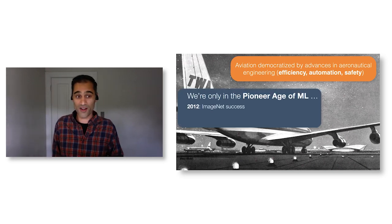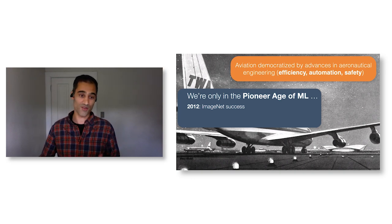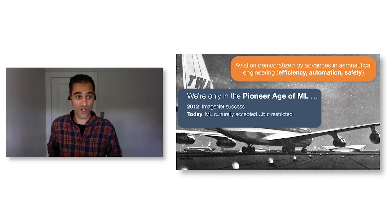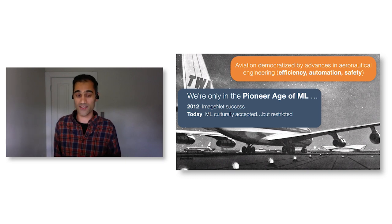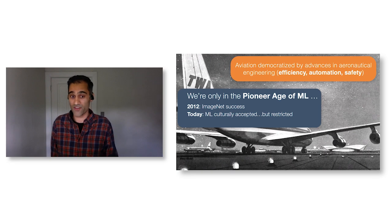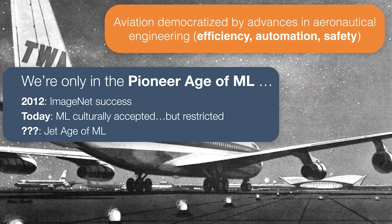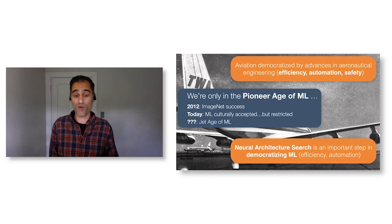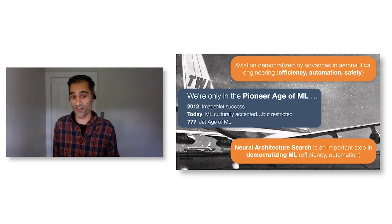How does this relate to machine learning? I'd argue that we're only in the pioneer age of machine learning. The success of deep learning on ImageNet in 2012 was a sort of Kitty Hawk moment. Machine learning is culturally accepted today, but it's very much restricted to a handful of the world's leading organizations. The real question is how do we get to the jet age, and at a high level, we need to rethink machine learning as an engineering discipline.